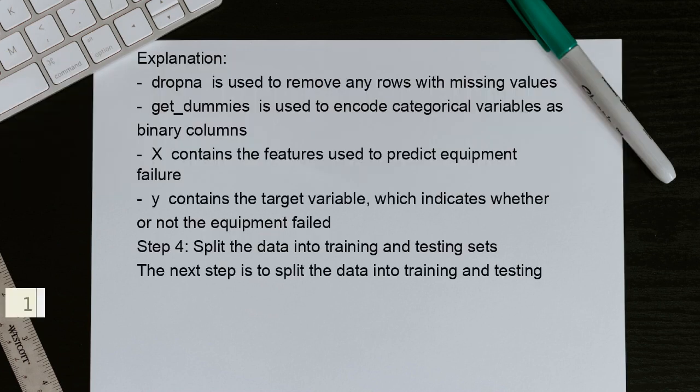Let's continue. Explanation: dropna is used to remove any rows with missing values. get_dummies is used to encode categorical variables as binary columns. X contains the features used to predict equipment failure. Y contains the target variable, which indicates whether or not the equipment failed.